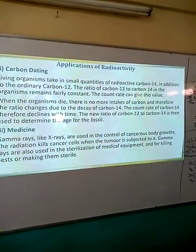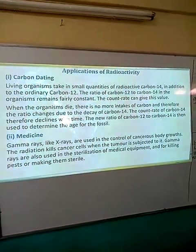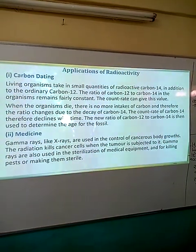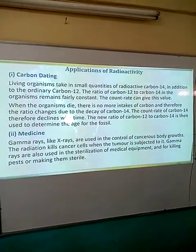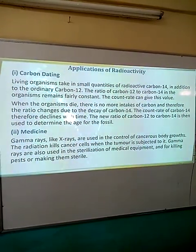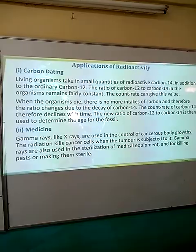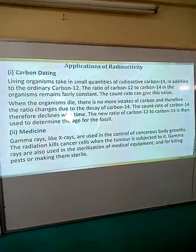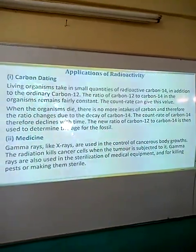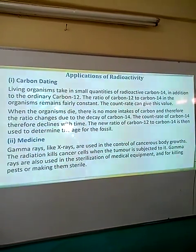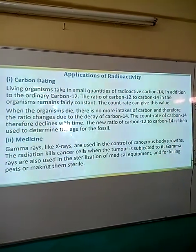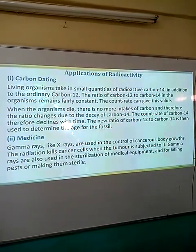Carbon dating is a method or technique that is used to determine the age of fossils. Any living organism takes both carbon-12 and carbon-14 during its lifetime. When the organism dies, the ratio between the carbon-12 and carbon-14 differs, and this difference is what is determined by the count rate, and from there we can determine the age of the fossil or the dead organism.